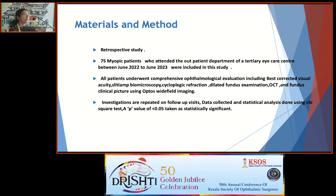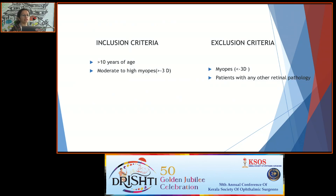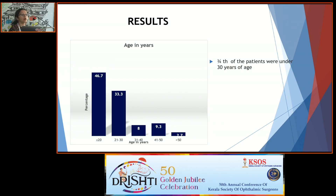A p-value less than 0.05 was taken as significant. Inclusion criteria included patients more than 10 years of age with moderate-to-high myopia. Exclusion criteria included myopia less than minus 3 diopters and patients with any other retinal pathology. Results showed that more than three-fourths of the patients were under 30 years of age.